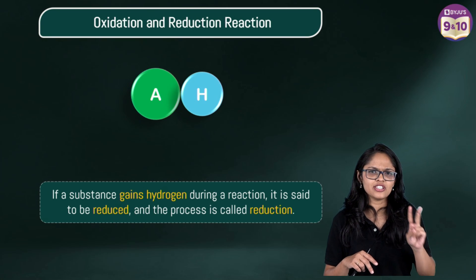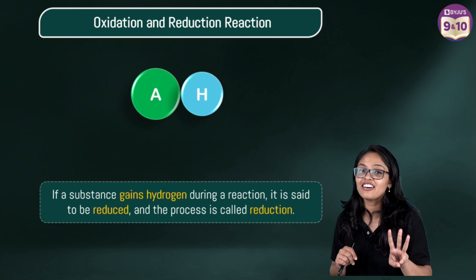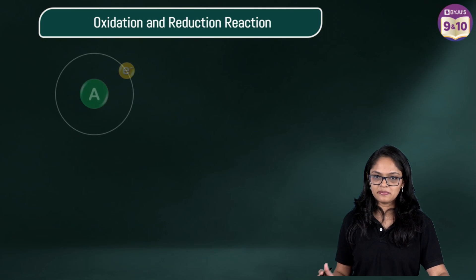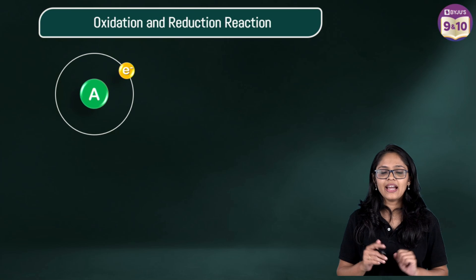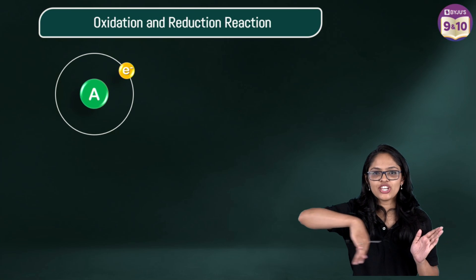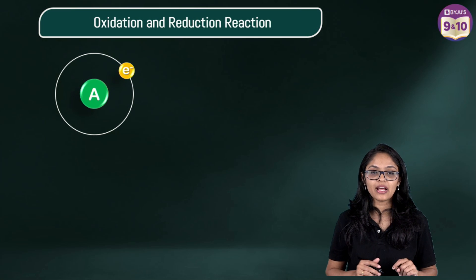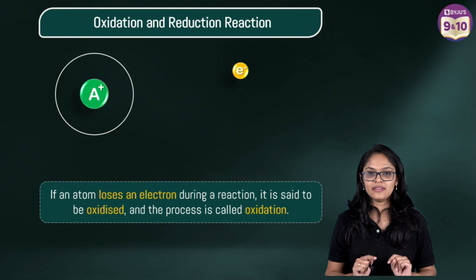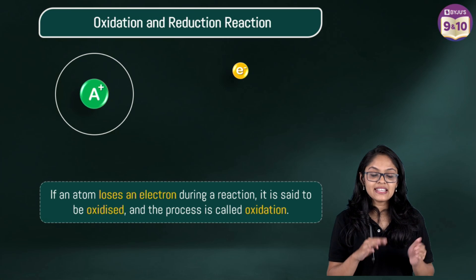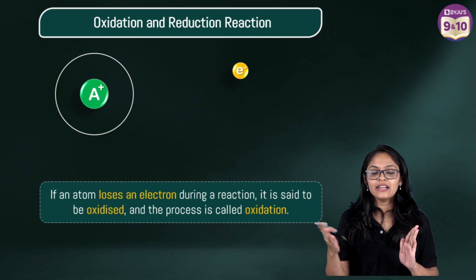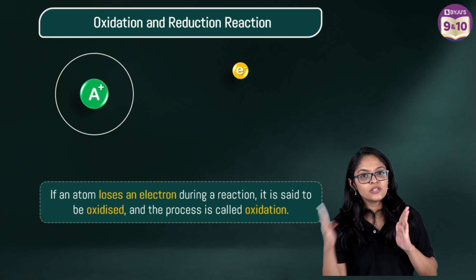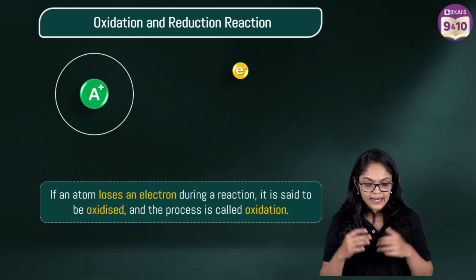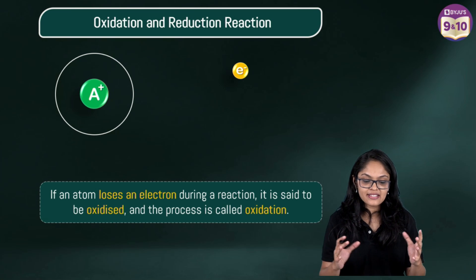We understood two ways of oxidation and reduction. Well, there is a third way. For example, there is one atom called A and it has one electron in the outer shell. That atom loses that electron and becomes plus one. So losing an electron is also known to be oxidation. If an atom loses an electron during a reaction, it is said to be oxidized and the process is called oxidation.